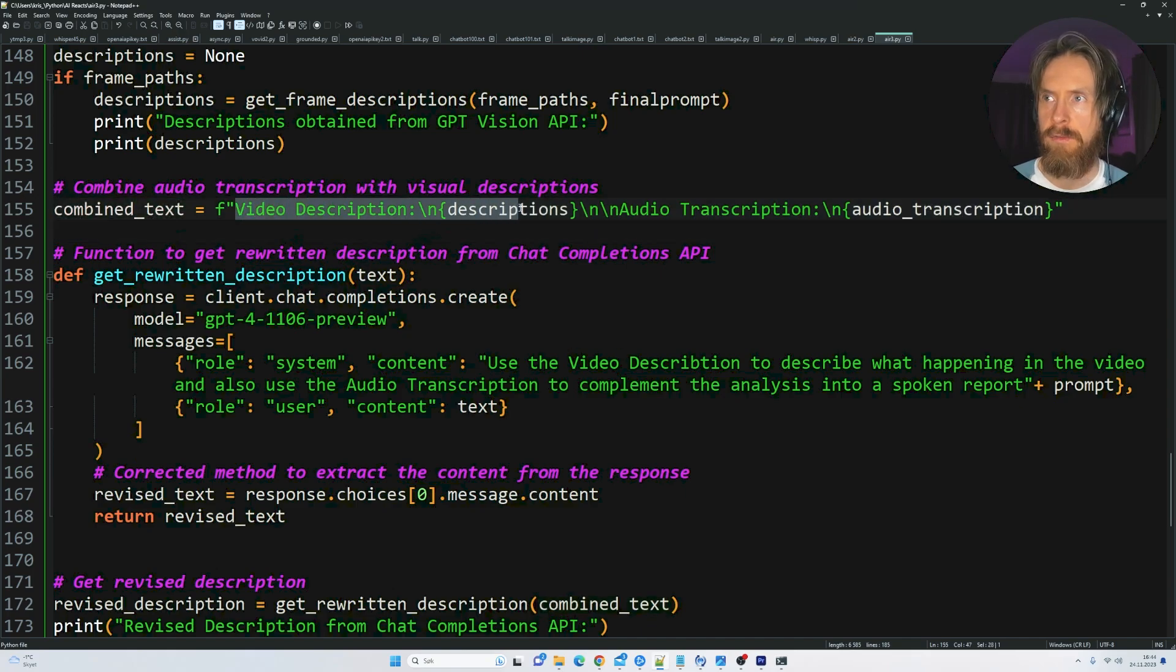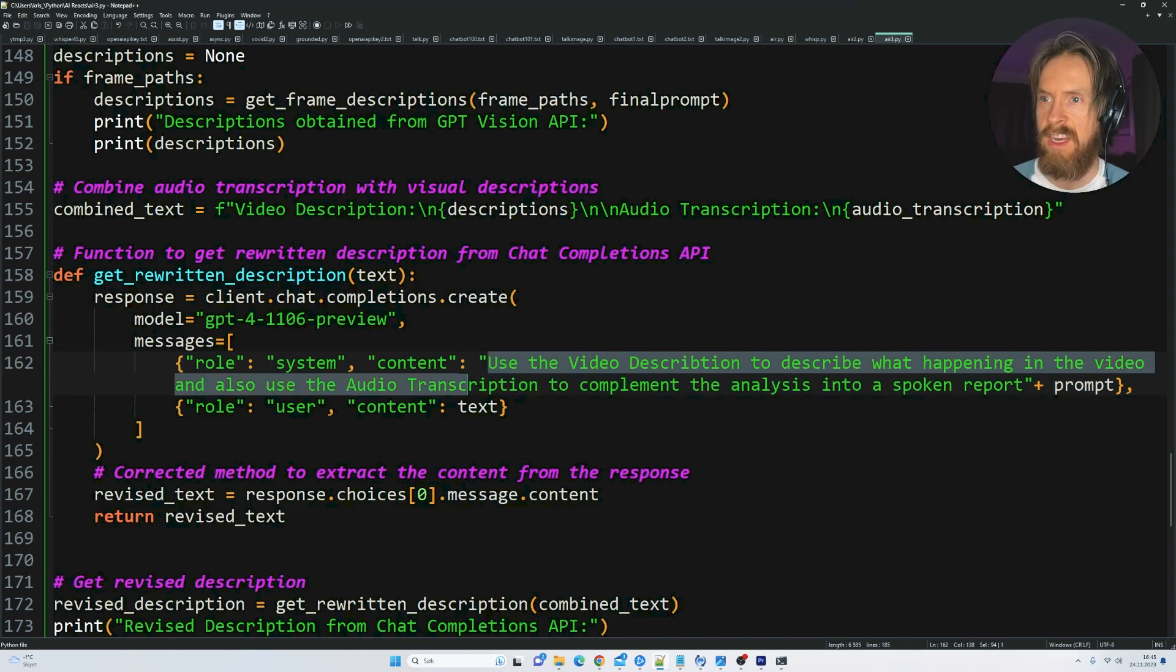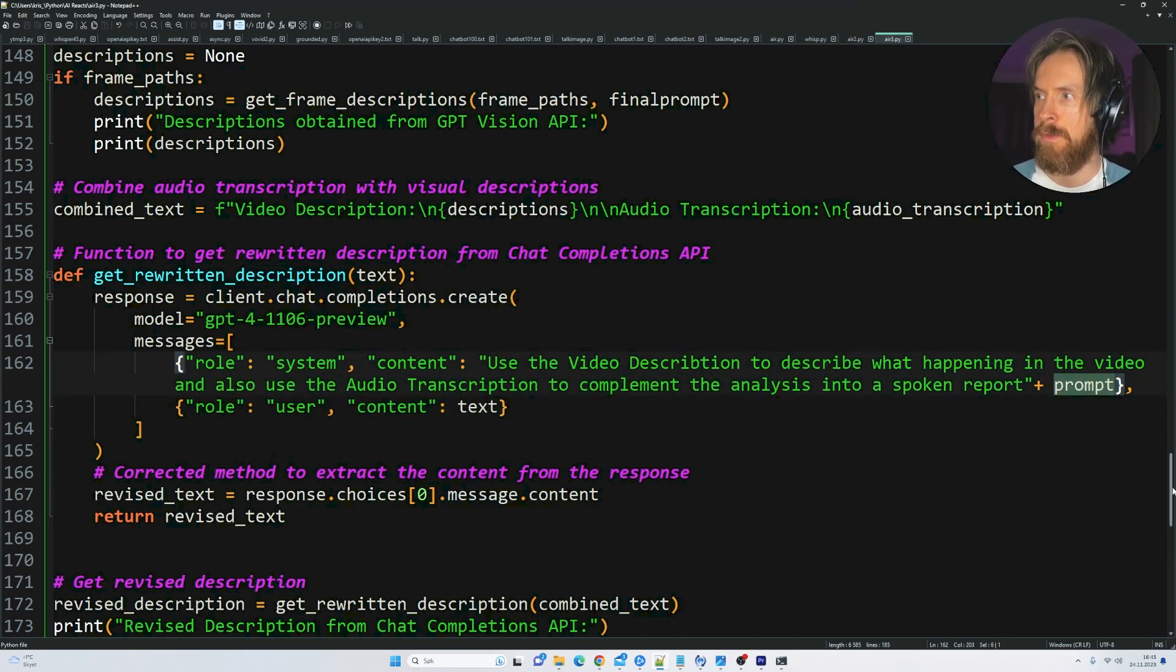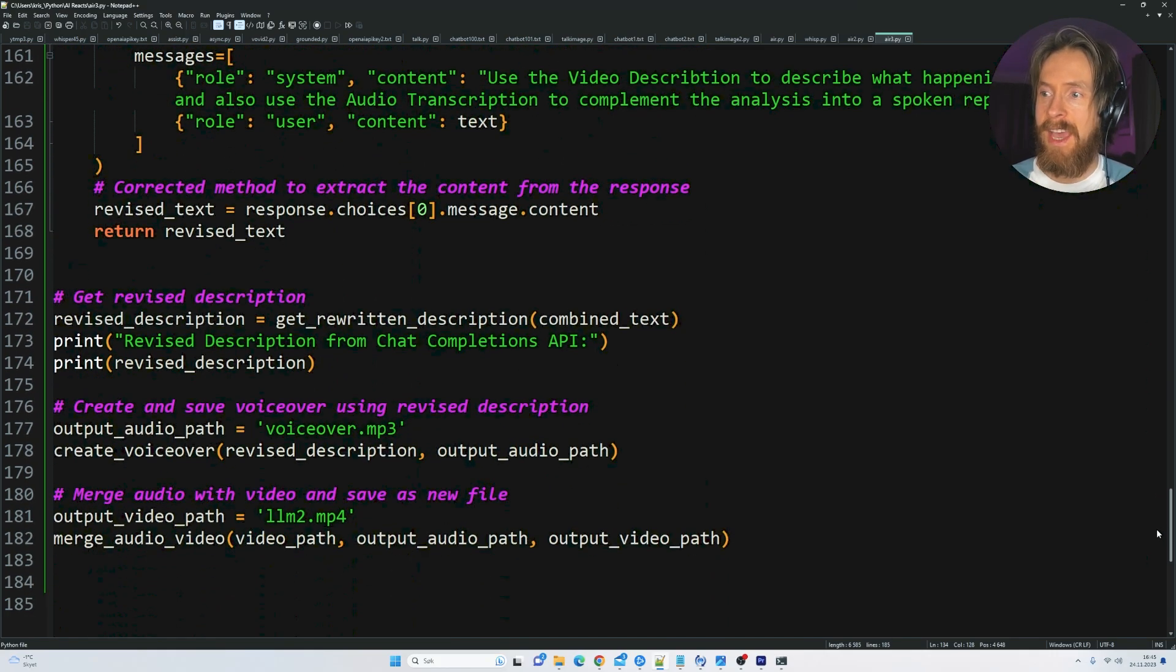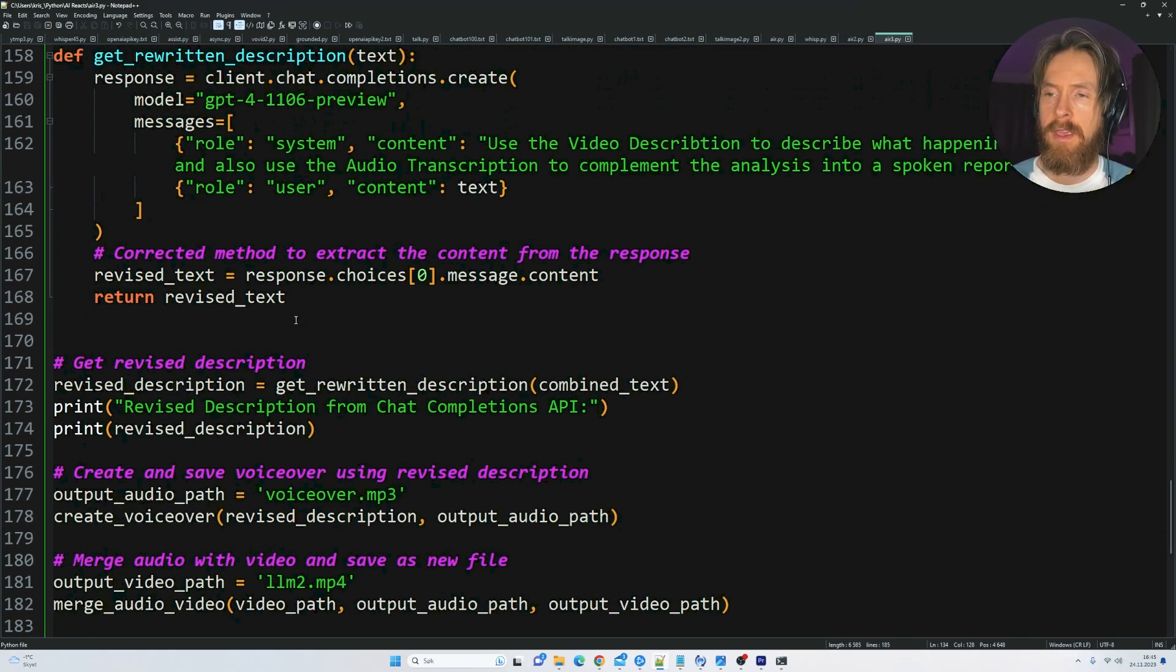We also have to add something called get rewritten description because we want to combine the video description with the audio transcription. We need to create a prompt to use the video description to describe what's happening in the video and also use the audio transcription to complement the analysis into a spoken report. This has something to do with the video duration and word count. We want to set the word count and fetch the video duration so we don't get a description that is going to be too long.